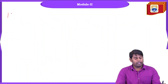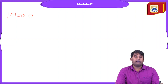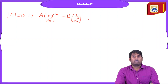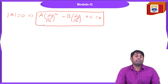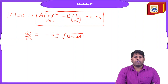When we set |A| = 0, the matrix becomes singular. Rearranging, we form the equation: A·(dy/dx)² − B·(dy/dx) + C = 0. Solving for dy/dx using the quadratic formula gives: dy/dx = [−B ± √(B² − 4AC)] / 2A. This is the formulation we will apply.